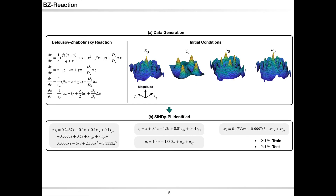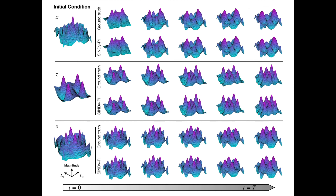That's why we can now use SINDy-Pi to identify rational PDEs that were previously out of reach, for example the simplified model of the BZ reaction. The simplified BZ reaction model has a really interesting rational form, which can be identified easily using SINDy-Pi. We simulate the model and provide training and testing data to SINDy-Pi, which generates the correct model representing the dynamics. When we simulate the identified model, it matches really well with the ground truth.